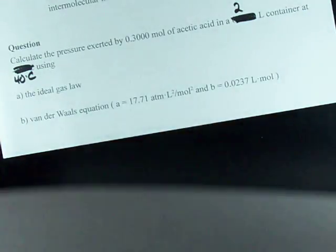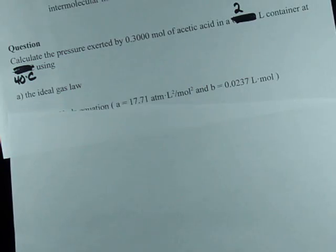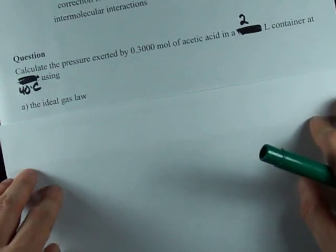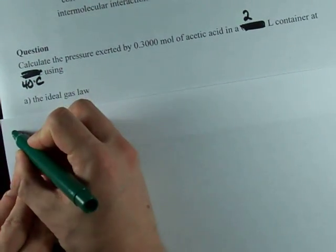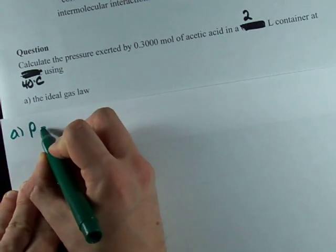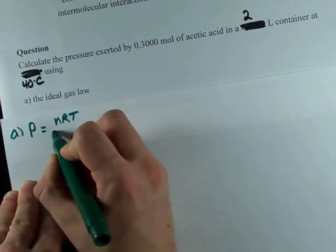Alright, that's easy. PV equals NRT, no big deal. By the ideal gas law, the pressure is simply NRT over V.